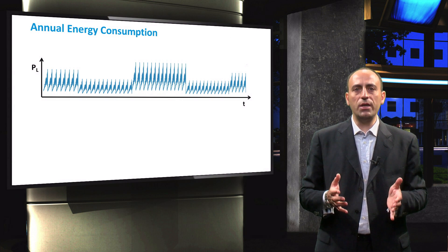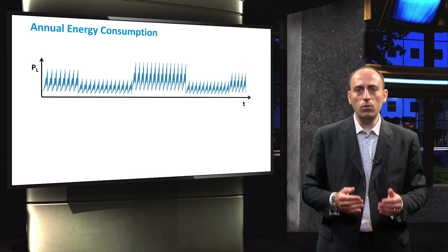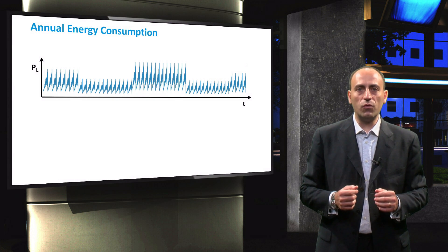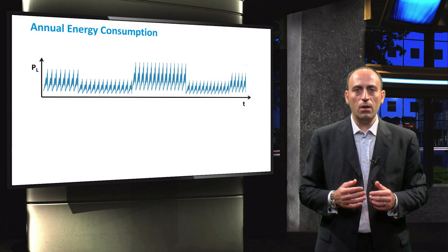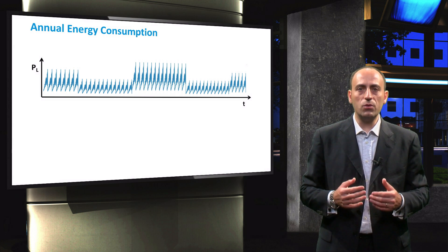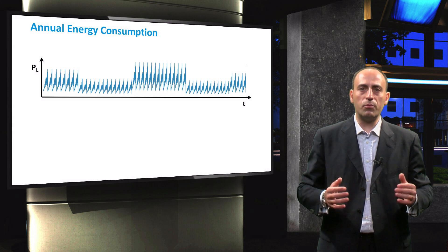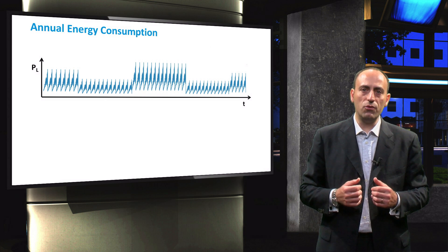The load profile shown here is obtained by analyzing the load consumption in one week. The analysis is performed four times per year — once in winter, spring, summer, and autumn. The one-week load analysis is then used for all the weeks of that respective season. In this way, a full year load profile is obtained. In this load profile, the seasonal variation during the year is clearly visible.